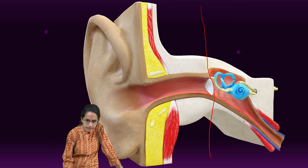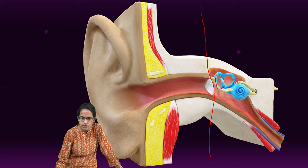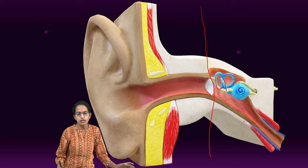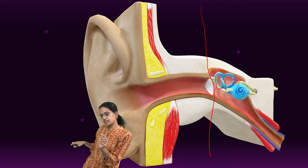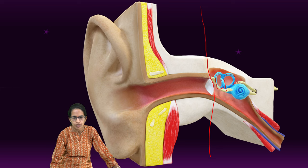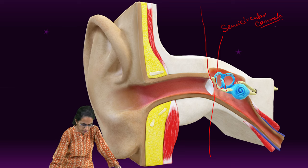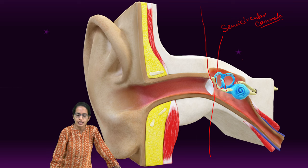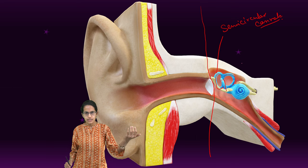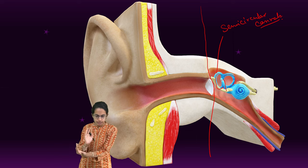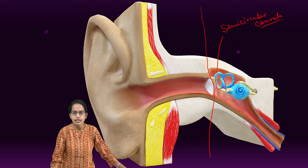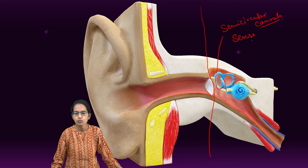Coming on to the inner ear, these structures — three of them — two of them are visible and the third one is like this. These three are called semi-circular canals. These semi-circular canals are three: one is anterior, another is posterior, and the third is the lateral one, and they sense movement.